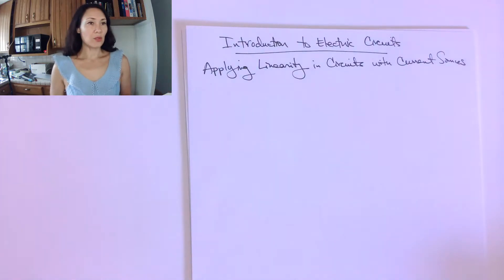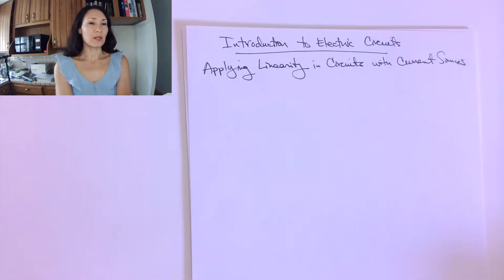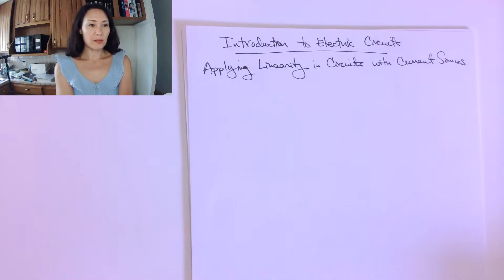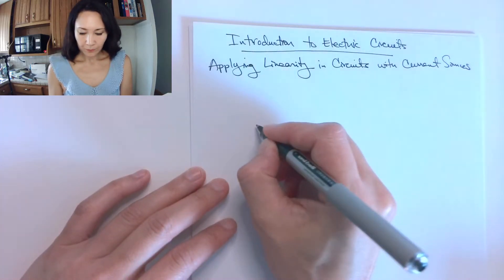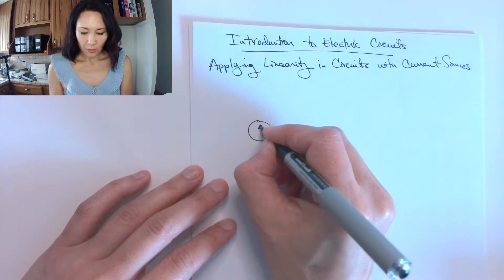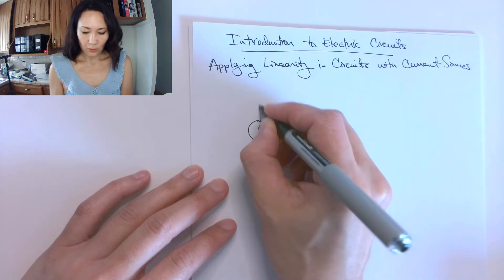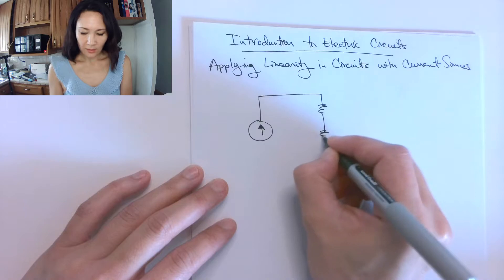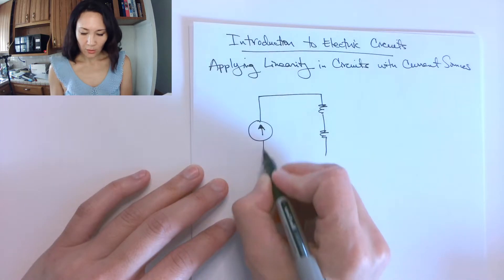Now that we've seen how to apply linearity in circuits with voltage sources, let's see how that extends to circuits with current sources. Let's use the same circuit that we used to introduce linearity for voltage sources — just a simple series circuit with two resistors.